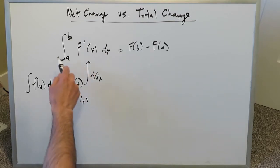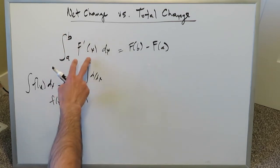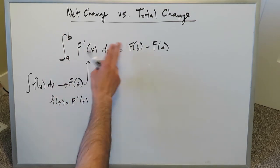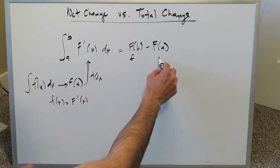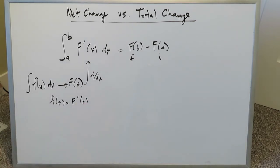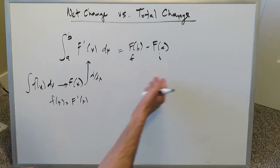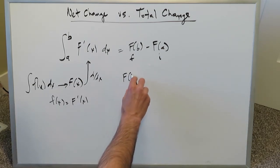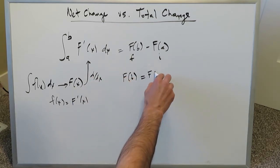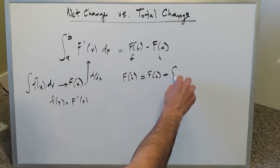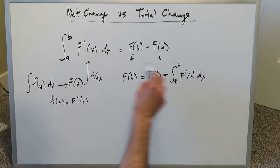When you run this derivative through a definite integration procedure, what you get is: the definite integration of a derivative equals the upper limit minus the lower limit — the final position minus the initial position. 'Position' here means the final state or initial state of the system. The final state equals the initial state plus the integral of its derivative.